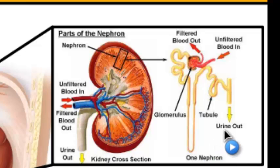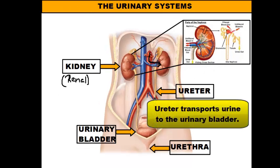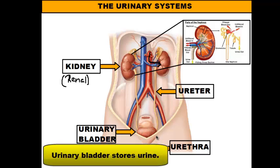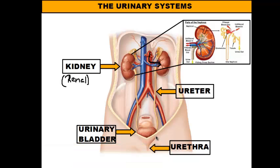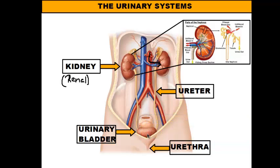The urine travels down the ureter and into the urinary bladder where it's stored. Since blood is constantly being filtered, it's good to have a storage bag, because otherwise urine would be leaking out of the body practically every minute of every day. The urinary bladder stores it, and when it gets too full, it activates stress receptors in the muscle that trigger your brain to tell you that you need to go to the bathroom.